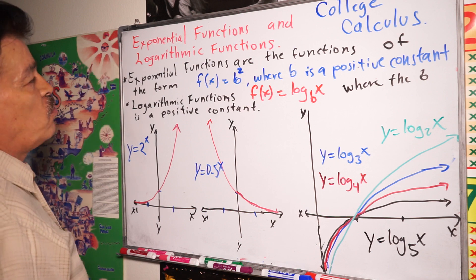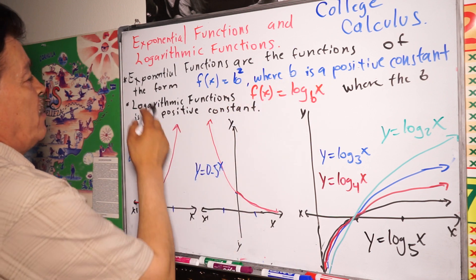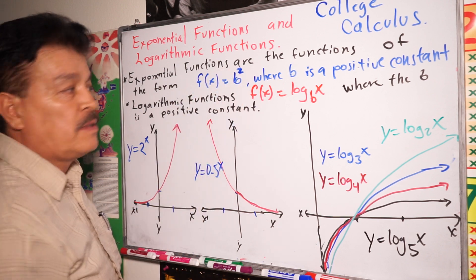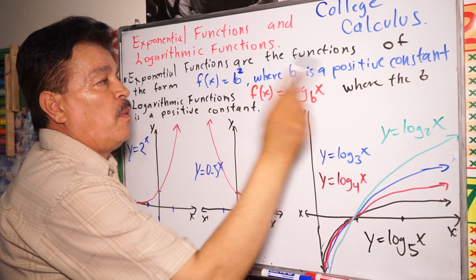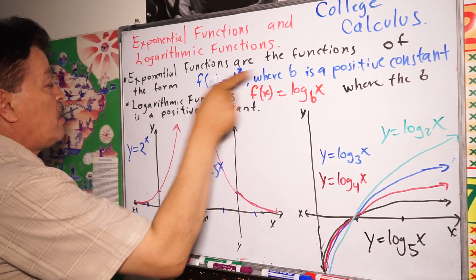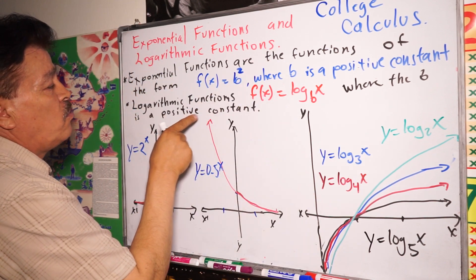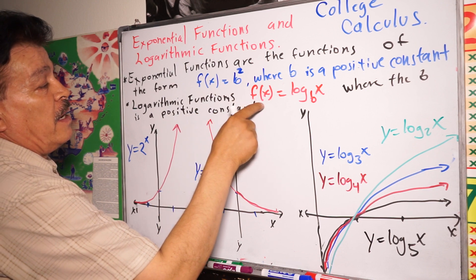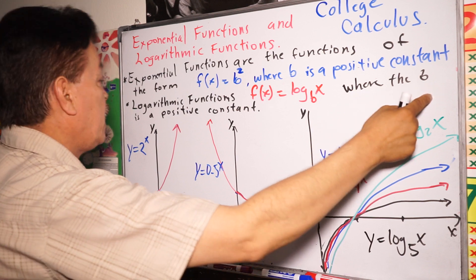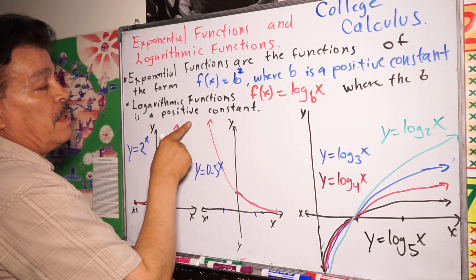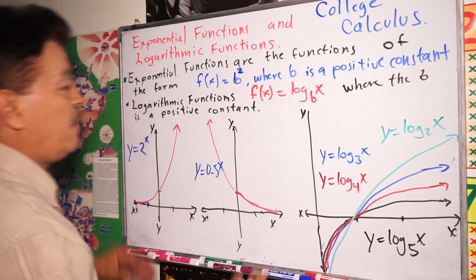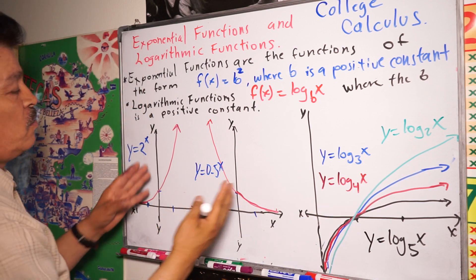Exponential functions are functions of the form f(x) equals b to the x power, where b is a positive constant. Logarithmic functions have the form f(x) equals log base b of x, where b is a positive constant. In this graph I'm going to show you.